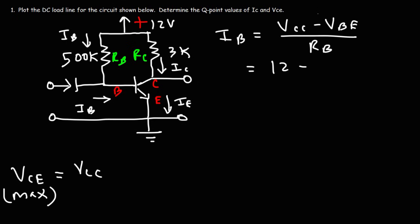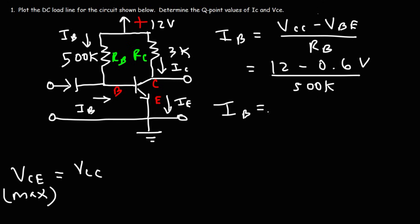VCC is 12V. VBE at its minimum is 0.6 volts, which is the same as for a silicon diode. For this example we're going to use 0.6. RB is 500 kΩ. So this is going to be 11.4 divided by 500K. Dividing volts by kilohms gives current in milliamps, so IB is 0.0228 milliamps.